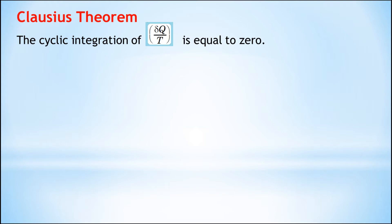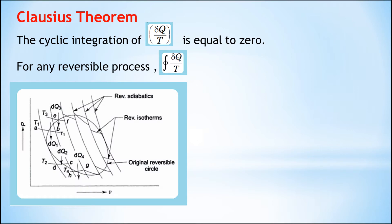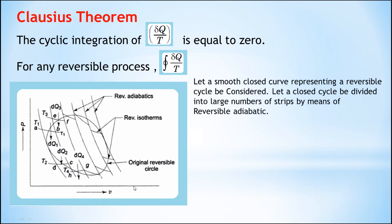Now we will prove the Clausius theorem: the cyclic integration of δQ/T is equal to zero for any reversible process. We draw the PV diagram for that particular cycle. Let a smooth closed curve representing a reversible cycle be considered. The closed cycle is divided into a large number of strips by means of reversible adiabatics, so the original cycle is replaced by a large number of strips.